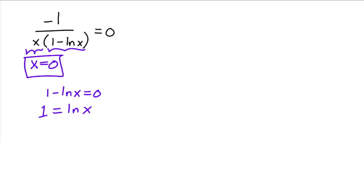I would get 1 equals to natural log of x. Using the definition of the logarithm, log base e of x, if I turn it into exponential notation, this would be e raised to the 1. So x is simply equal to e. Those are the two spots where this guy is undefined. Notice that it doesn't have any zeros, because if you multiply both sides by the denominator, you would get negative 1 equals to 0, which has no solution.